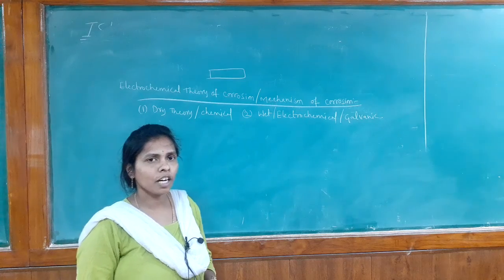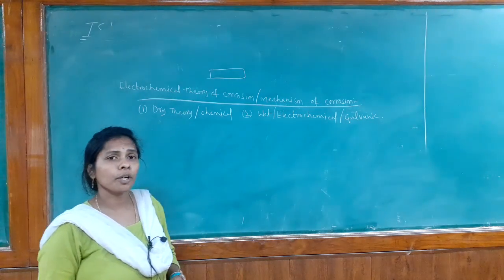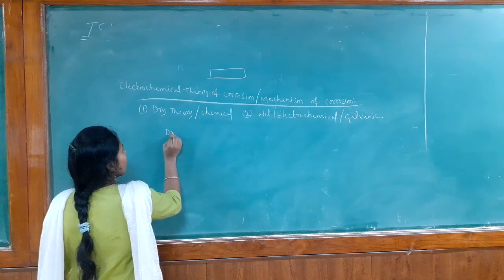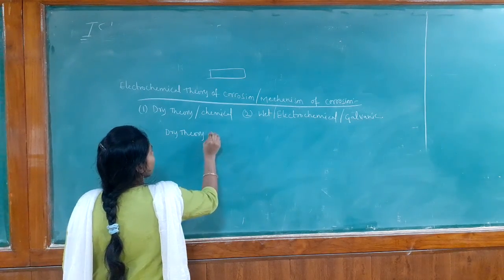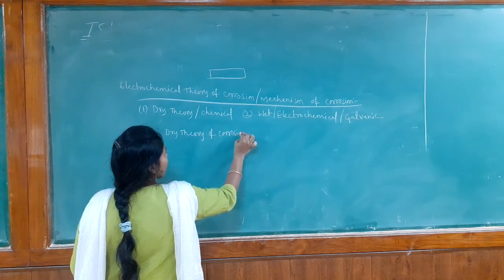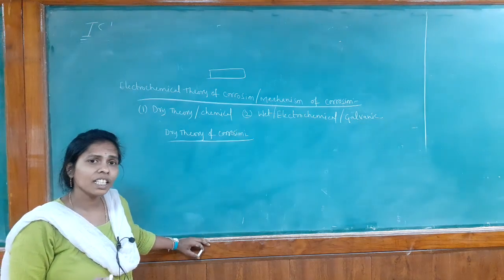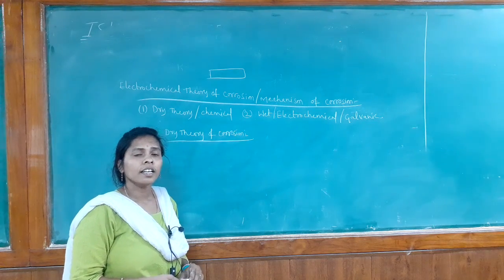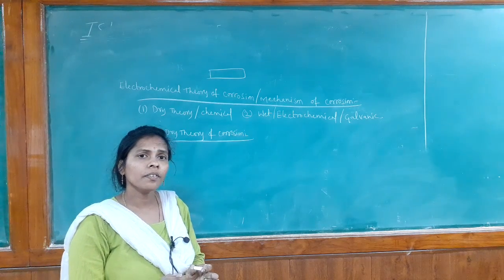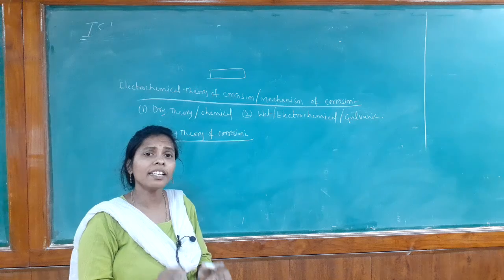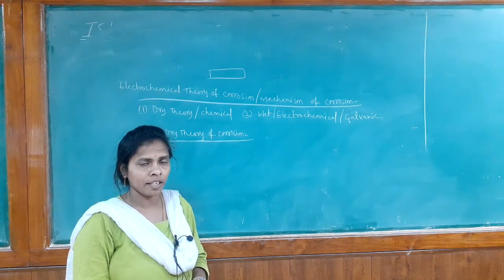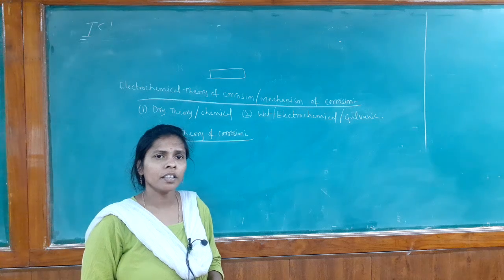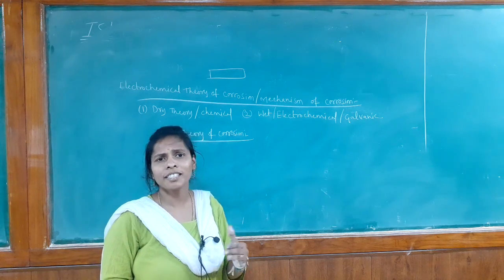Today I am going to explain the dry theory of corrosion, which is a very important long question. Dry theory of corrosion is nothing but the corrosion of the metal in the absence of moisture. That means the metal undergoes destruction only by reacting with chemicals in the environment, not with moisture. Along with moisture, various chemicals are present in the environment.